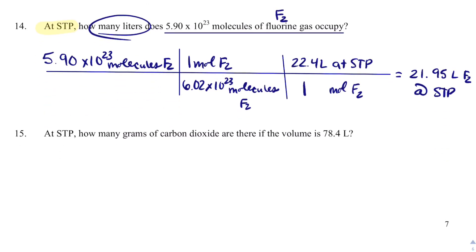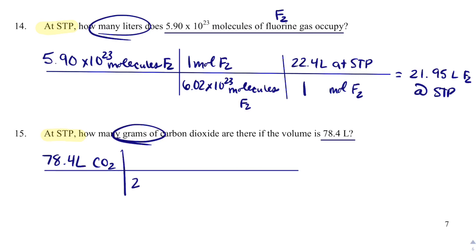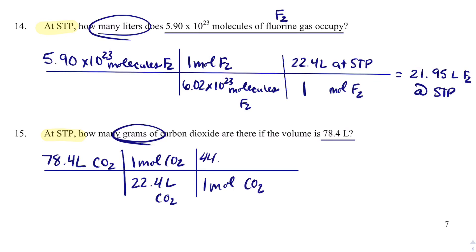Number 15: we're given 78.4 liters of CO2 at STP and need to solve for grams. We can use 22.4 liters per mole since we're at STP. So 78.4 liters of CO2 divided by 22.4 liters per mole gives us moles of CO2, and then in 1 mole of CO2 there are 44.01 grams. When I solve that out, I get 154.04 grams of CO2.